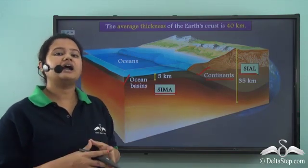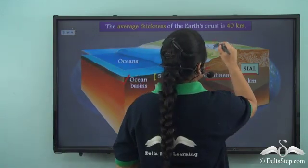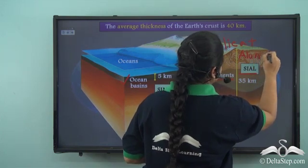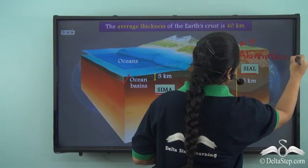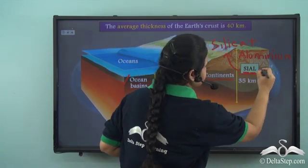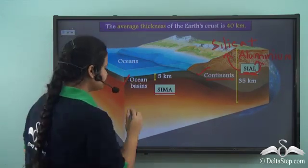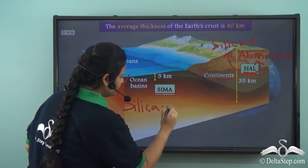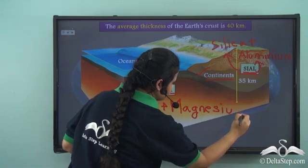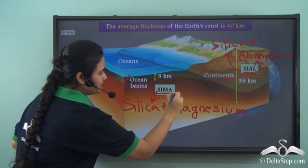These two parts are named after their mineral composition. The continental crust is rich in minerals like Silica and Aluminium, hence it is named Sial — where Si stands for Silica and Al stands for Aluminium. Similarly, the oceanic crust is rich in minerals like Silica and Magnesium, hence it is named Sima — where Si stands for Silica and Ma stands for Magnesium.